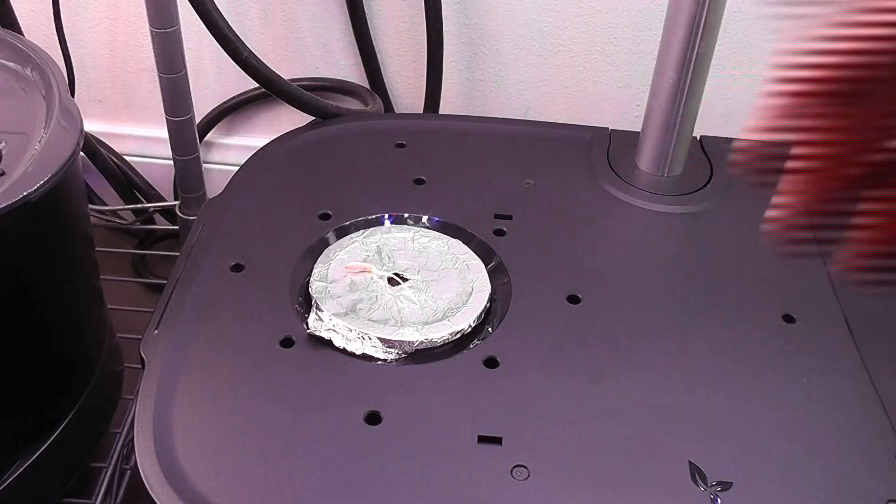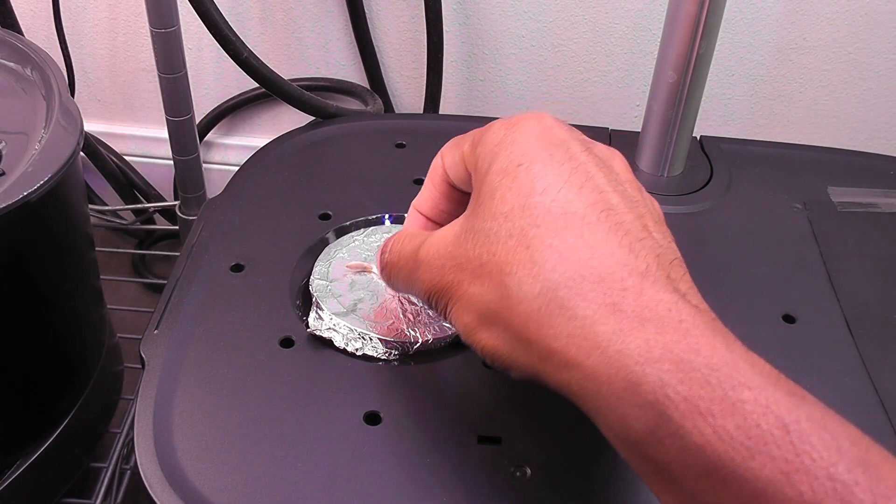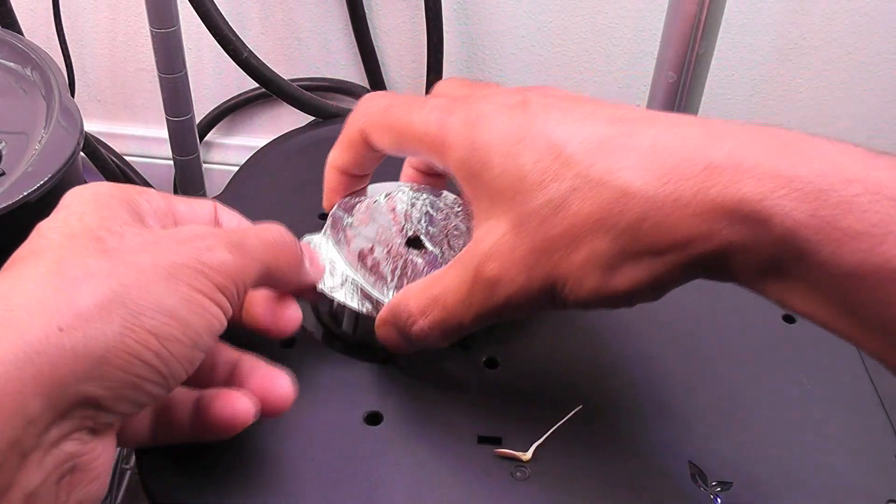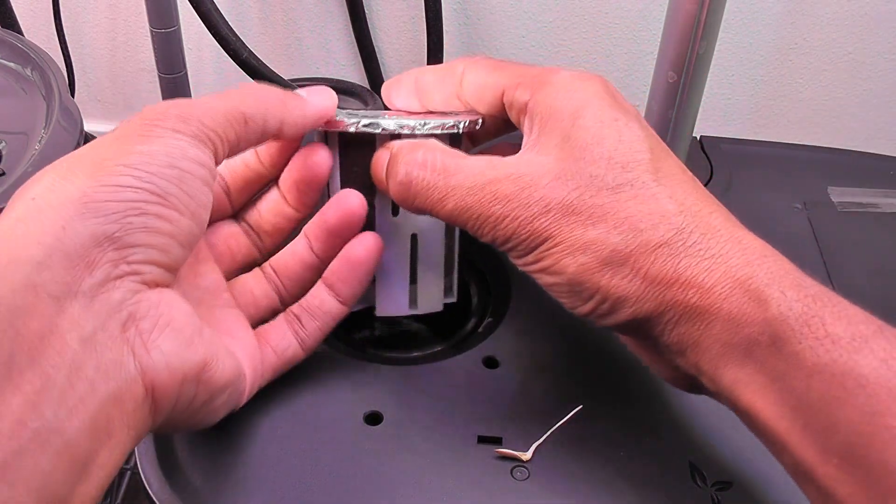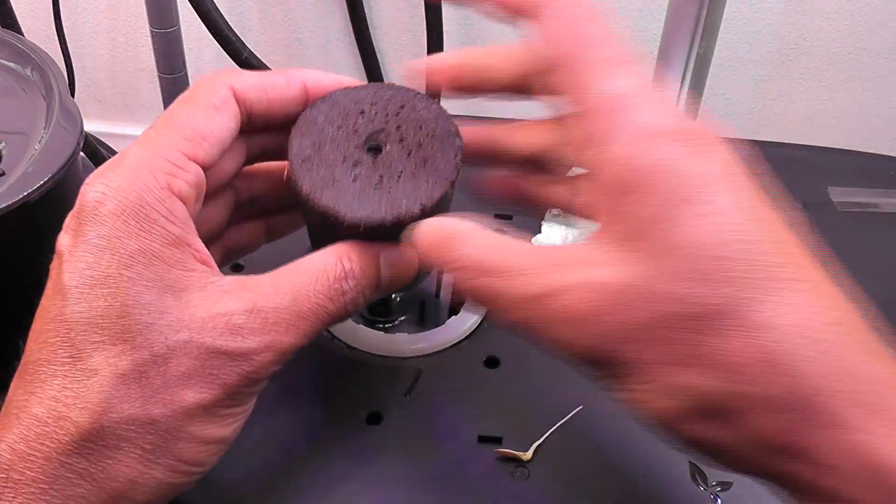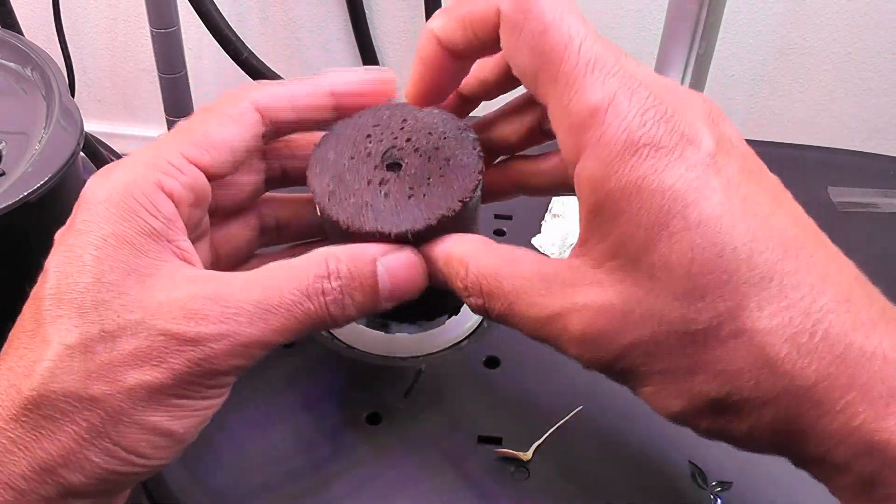If you ever see this issue, you need to take out the seedling and reposition it into the sponge. It is a very easy and straightforward process. First, take out the pod and take out the sponge from the pod.